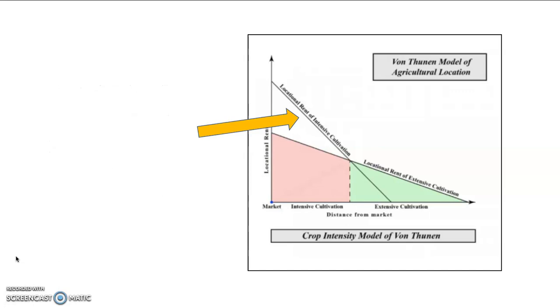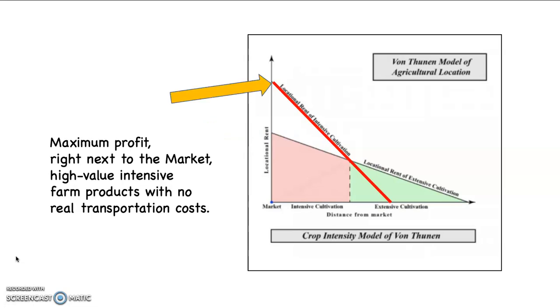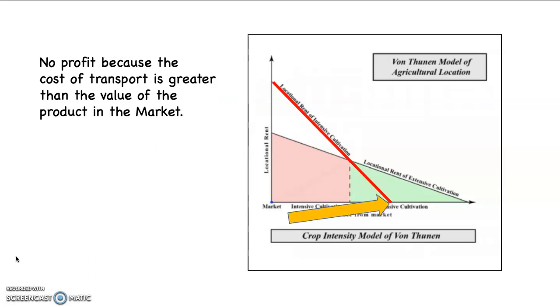Now the bronze arrow is pointing at that line that runs obliquely across the graph and it says locational rent of intensive agriculture. I just highlighted it in red for you. Notice this. Right where the market is at, the locational rent, in other words the profit, is going to be the greatest. The farmer will be able to maximize profit right next to the market with high valued intensive farm products because there's no real cost of transportation. It's right next to the market. But then notice this. As you increase distance away from the market, what's going to happen is the value of those intensive crops is going to go down because of the cost of transportation.